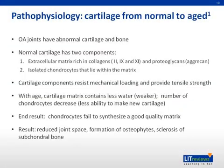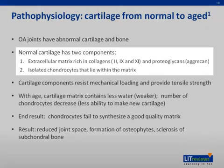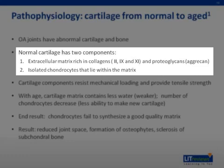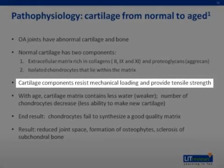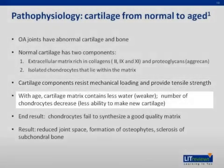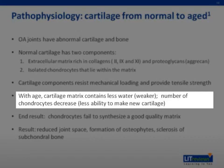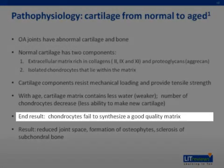To understand how OA evolves, we have to go back and think about cartilage. Cartilage is a substance that lines the bone and provides mechanical resistance as we move — it protects the bone. Normal cartilage has two main components: an extracellular matrix rich in collagen and proteoglycans, and chondrocytes that lie within the matrix. These two components rely on each other to resist mechanical loading and provide tensile strength. As we age, so does our cartilage — it holds on to less water, which makes it weaker, and the number of chondrocytes drops off. The decrease in chondrocyte numbers leads to a reduced amount of new matrix being made, with the end result being weaker cartilage.